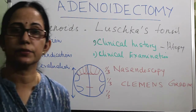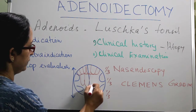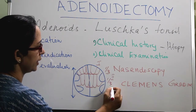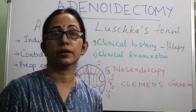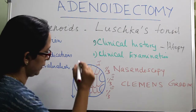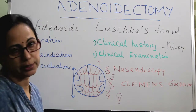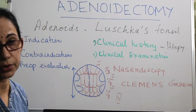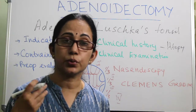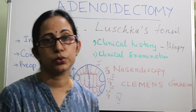In Clements grading: grade two is adenoid reaching from one-third to two-thirds of the vertical height of the choana; grade three is from two-thirds to near-complete filling of the choana — a small part is still remaining; and grade four is complete obstruction of the choana. Grade two, three, and four are indications for surgery.